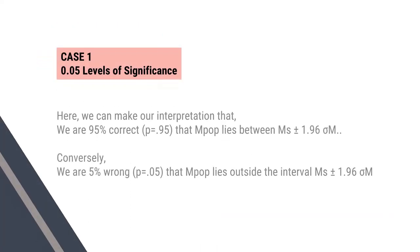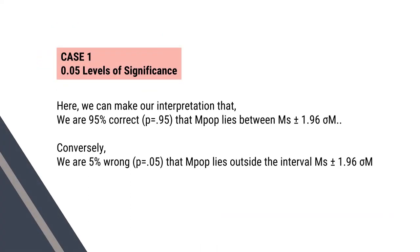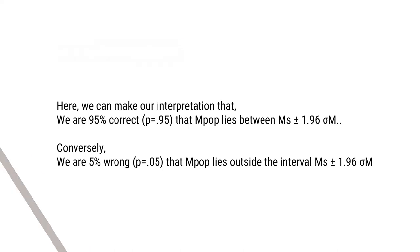Here we can make our interpretation that we are 95% correct that the population mean lies between the sample mean plus or minus 1.96 sigma-m. Alternatively, we can say that we are 95% correct; however, we are 5% wrong that the population mean lies outside this interval — that is, sample mean plus or minus 1.96 sigma-m.